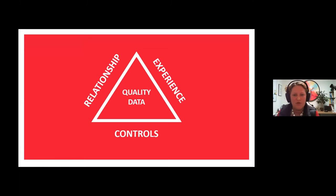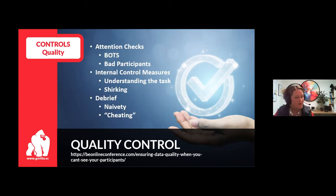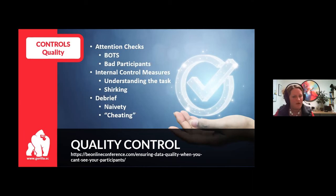The final part of the triad is the internal controls you put in place to measure and manage data quality. It's a sad fact that you'll never get 100% data quality, whether online or in the lab. You may be excluding participants' data for failing on a range of measures: attention checks to screen out inattentive participants and bots; internal control measures to screen out participants that haven't understood the instructions or are shirking; and debrief questionnaires to exclude participants that saw through your experiment. Once you accept the need to exclude, the process becomes easier to manage — simply over-recruit by 10% to 20% and define unambiguous exclusion criteria. Once you've defined these, it makes sense to pre-register them so you can't be accused of cherry-picking data. To know what the right criteria are, you need to run a pilot study.